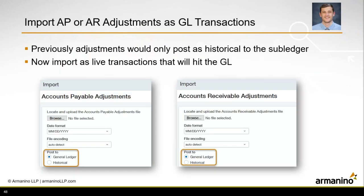The final change in AP this release is the ability to import adjustments as GL transactions — this also flows over to the AR module. Previously, imported adjustments only posted as historical transactions to the AP or AR sub ledger. Now there are two radio buttons giving you the option to post them as live transactions to the general ledger or as historical to the sub ledger. The general ledger option is the new addition for those looking to import those adjustments.